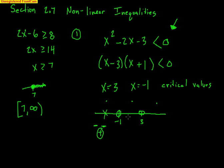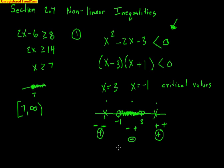Test a number in between — I'll pick 0. Zero minus 3 is negative, zero plus 1 is positive. A negative times a positive is a negative, and I like negatives because the answers I'm looking for need to be less than 0. So that middle interval contains solutions. The last interval: anything greater than 3, like 5. Five minus 3 is positive, 5 plus 1 is positive, and positive times positive is positive. I'm looking for values less than 0, so those don't work. The answer to the inequality is all numbers from negative 1 to 3.